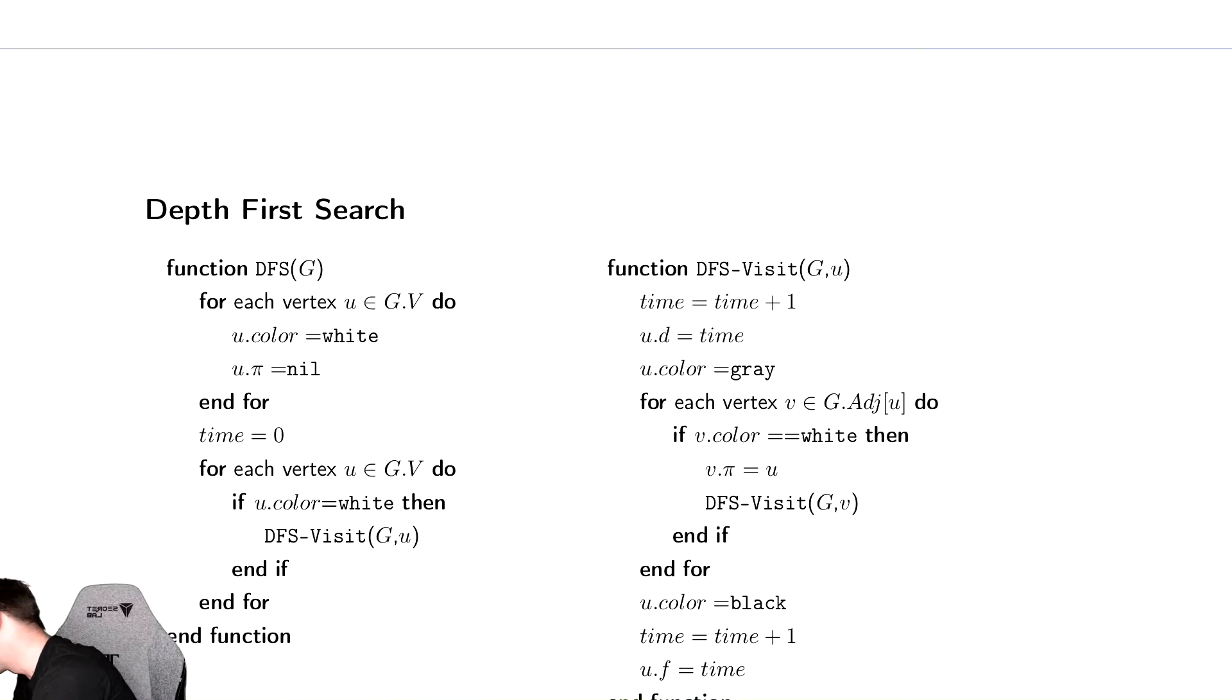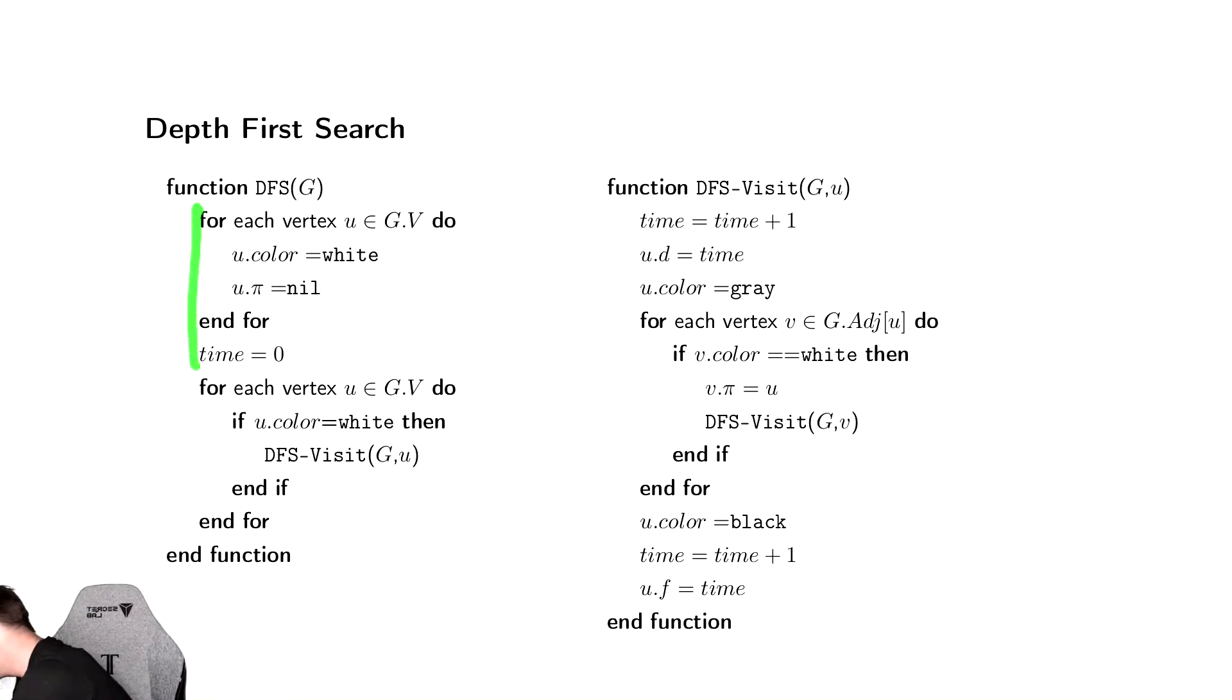So how do we do that? Just as before, we initialize all the vertices and then we start at some vertex u. Notice here we didn't have a starting vertex. A Depth First Search is often useful to explore an entire graph, even if it is not connected.